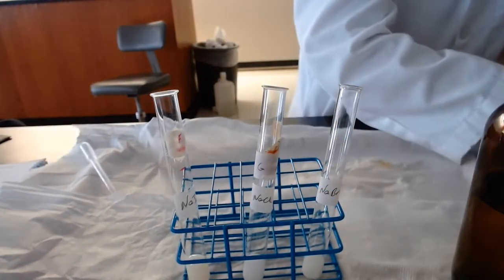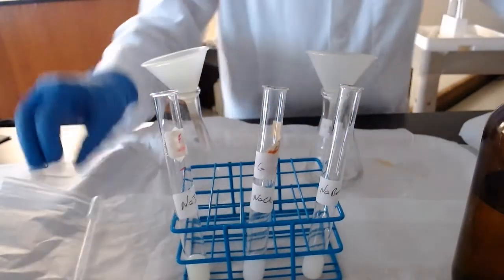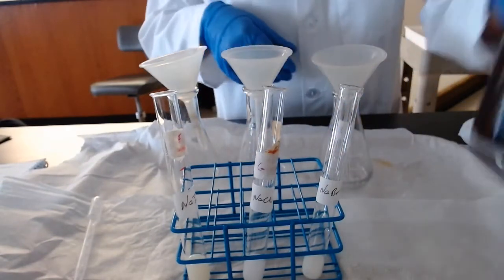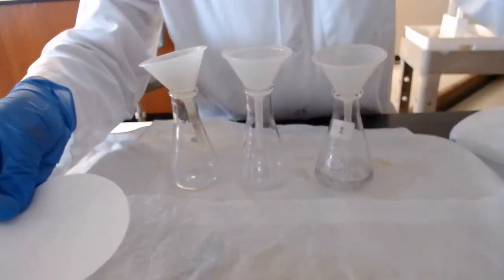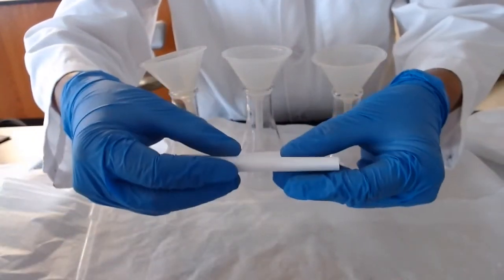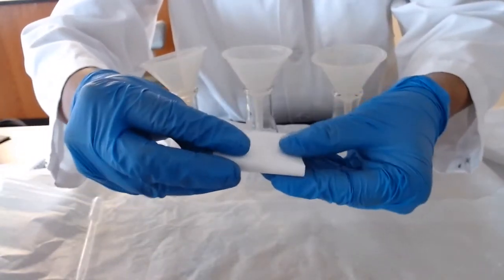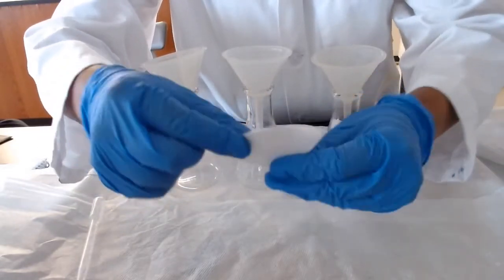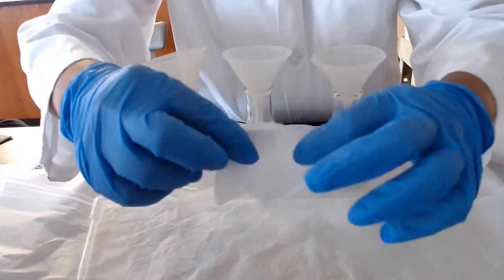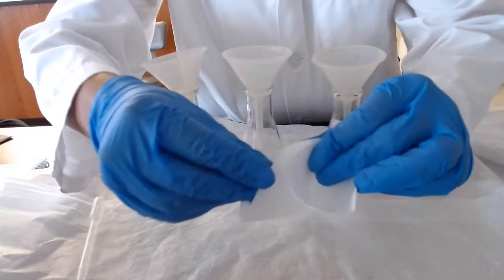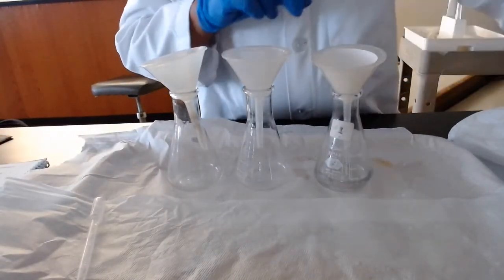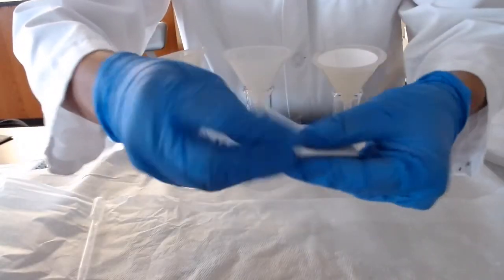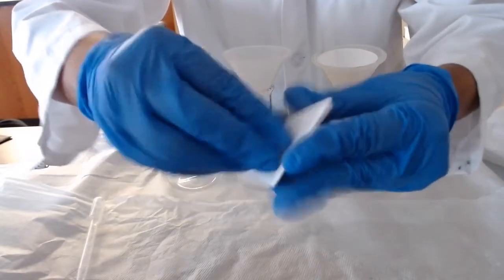The next thing we will do is filter these. We will use three separate filter papers, and I will show you how to correctly fold these. You fold it in half, fold it in half again. Then you will open this in such a way where you have one on one side and two, three on the other side. So you're forming a funnel, and this goes in here. I will do the same for the other two. This is what we will use to capture our precipitate.